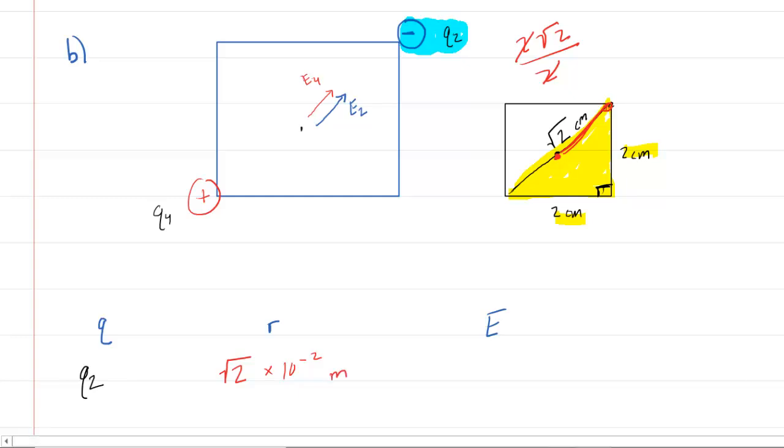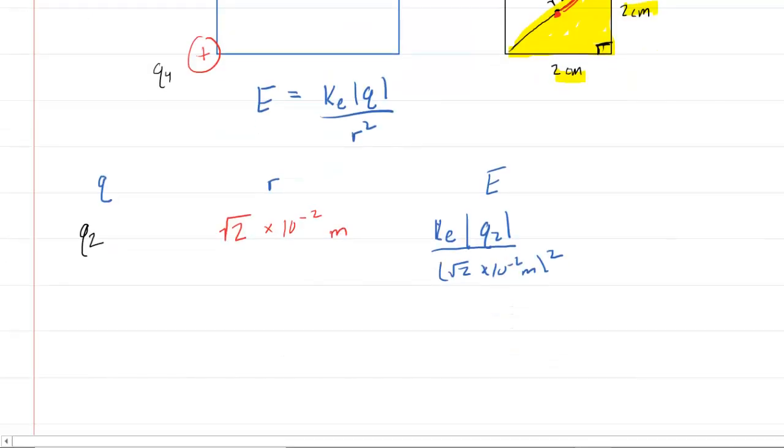Now for the electric field, we're going to be using the electric field equation for a point charge. Now we all know from this chapter that the electric field of a point charge is the Coulomb's constant multiplied by the magnitude of the charge divided by the distance squared. So what we would do is we would take K sub E, multiply that by the magnitude of the charge to the magnitude of Q2, and then we'll divide this by the square root of 2 times 10 to the negative 2 meters, and then don't forget to square that. So that takes care of the electric field from Q2.